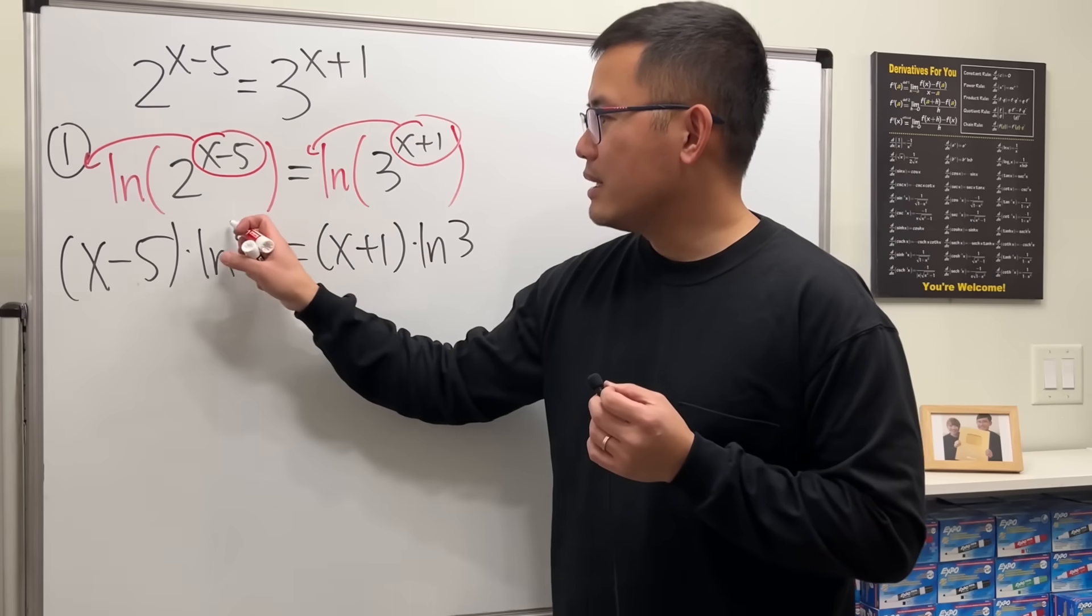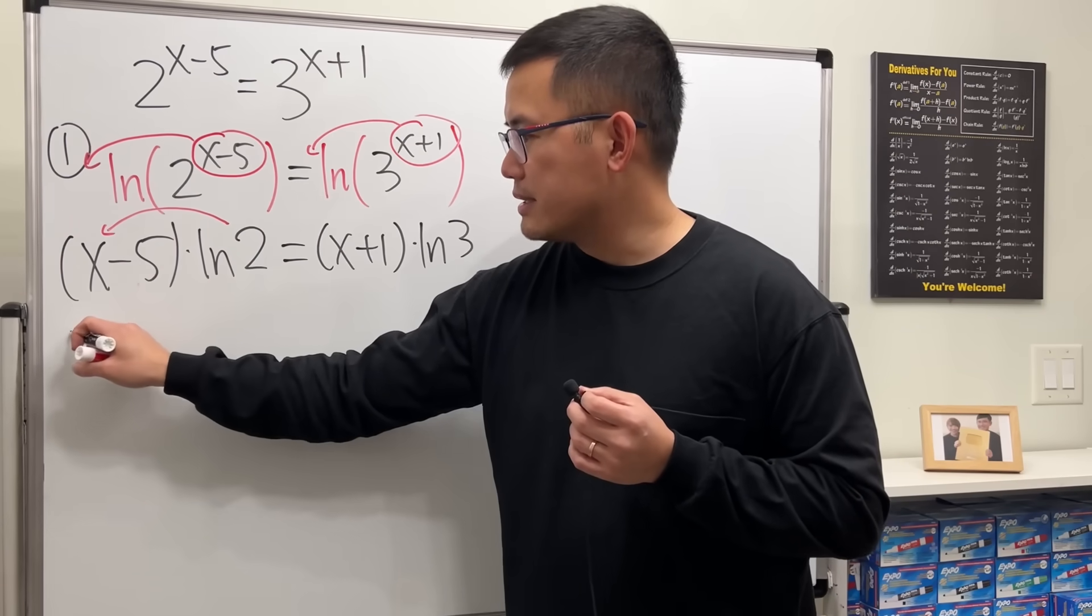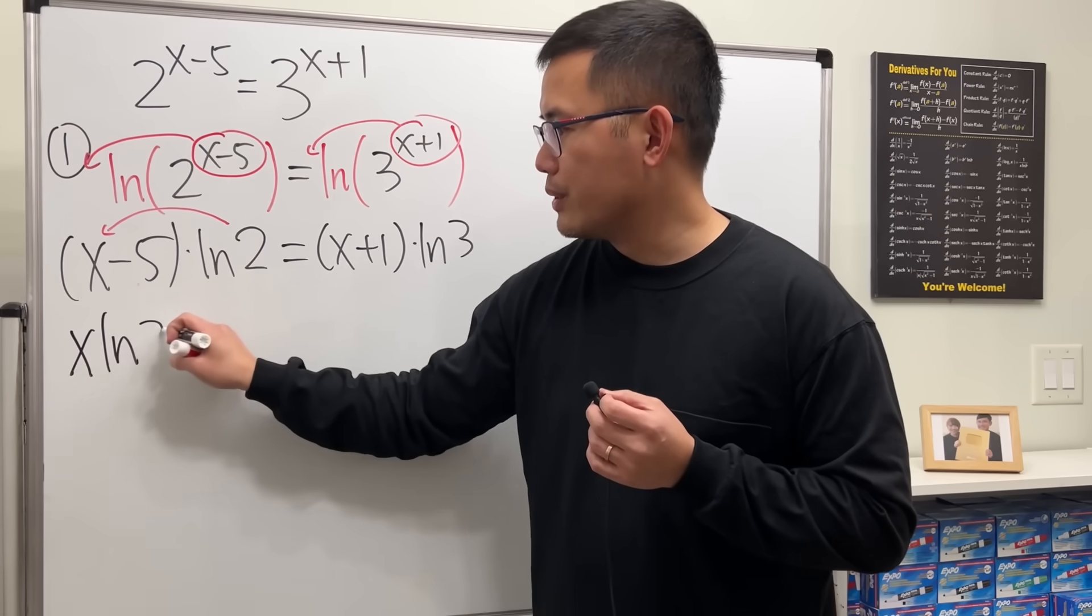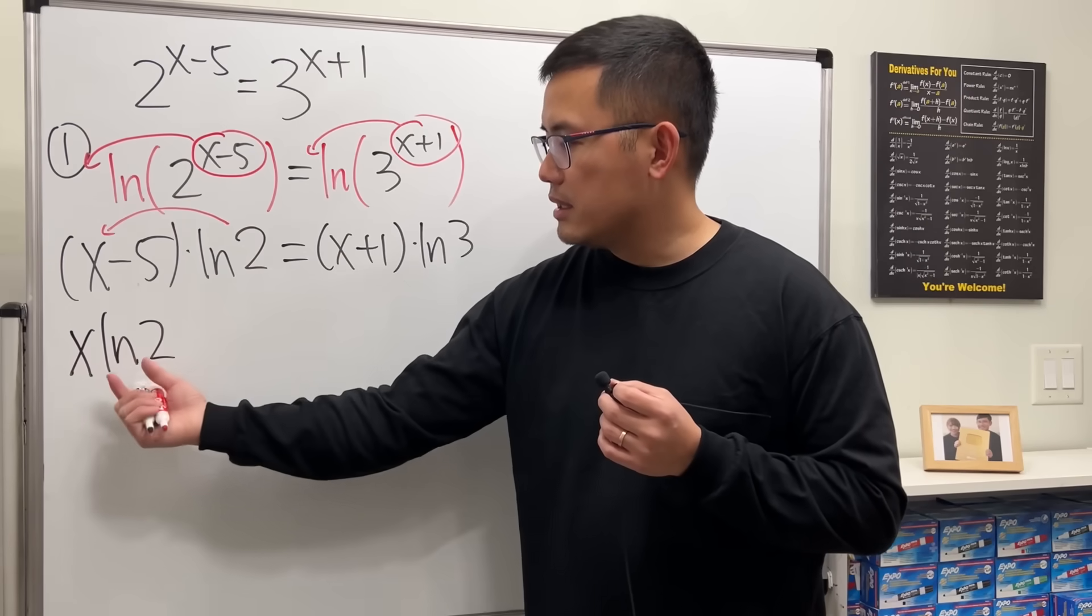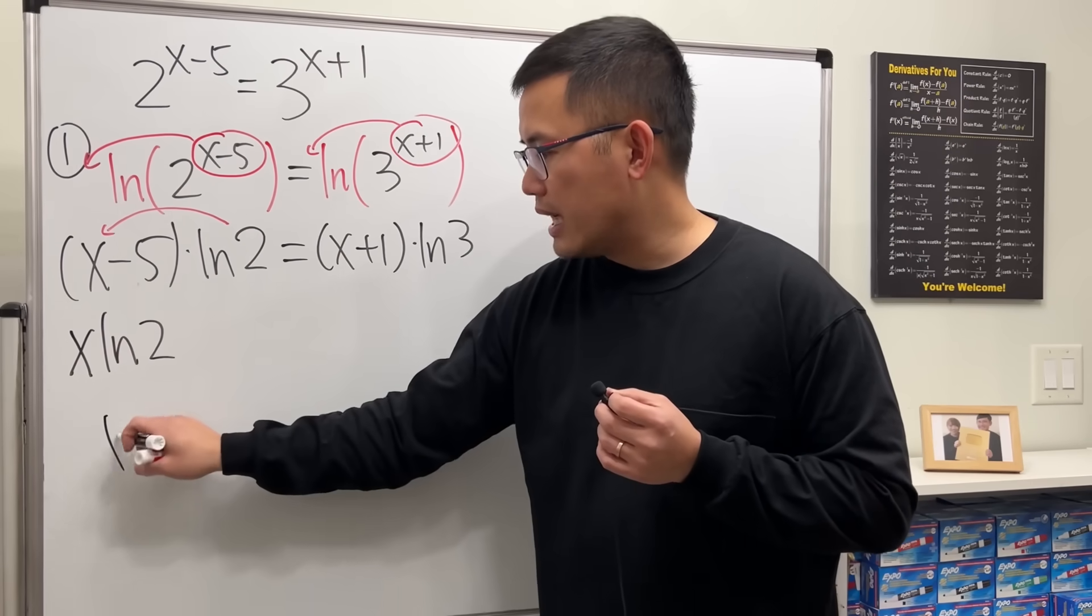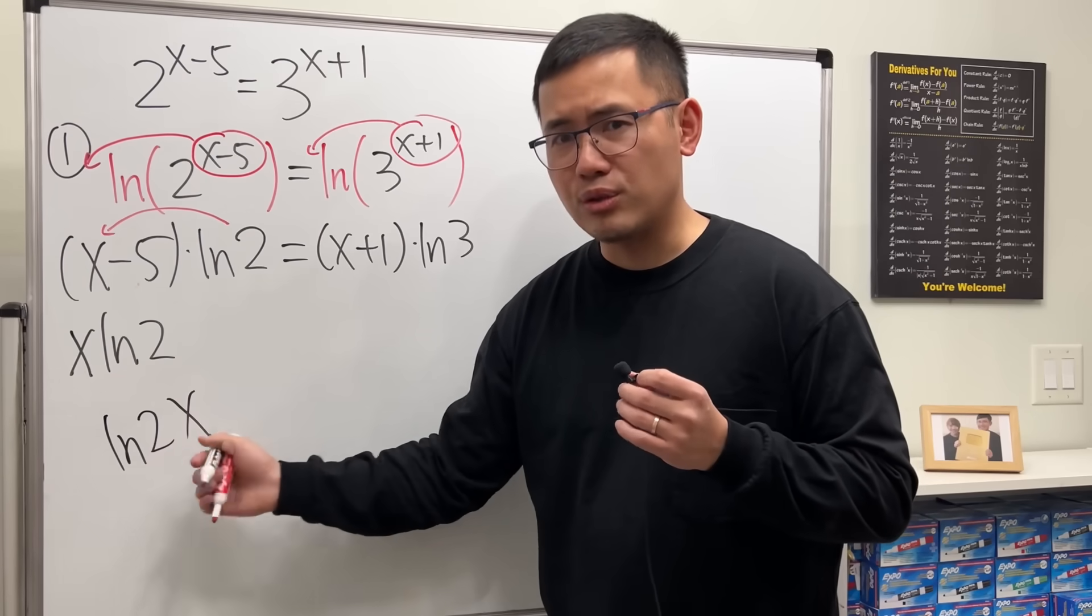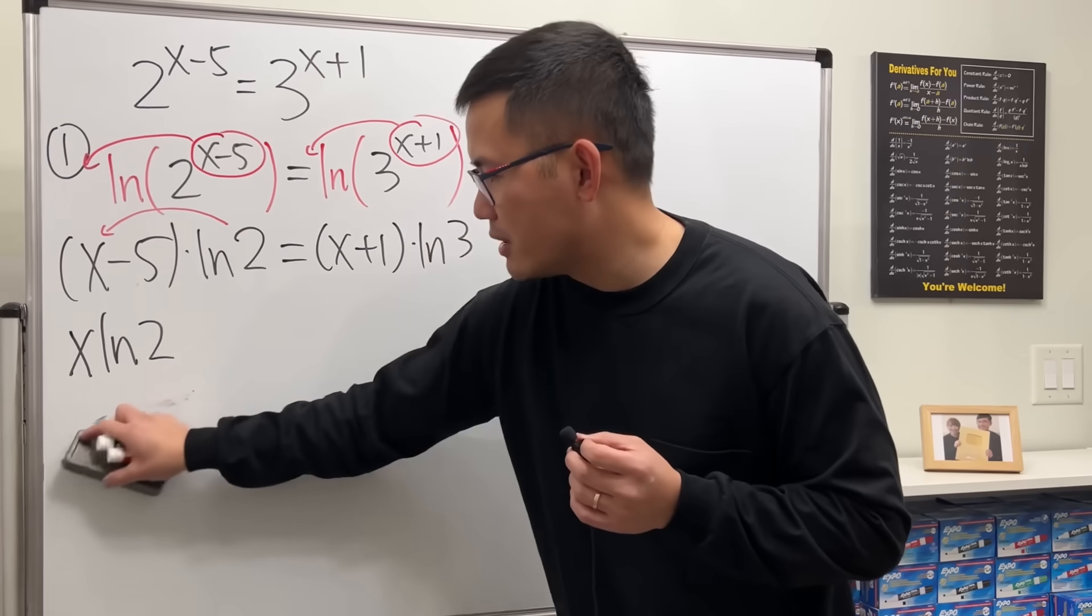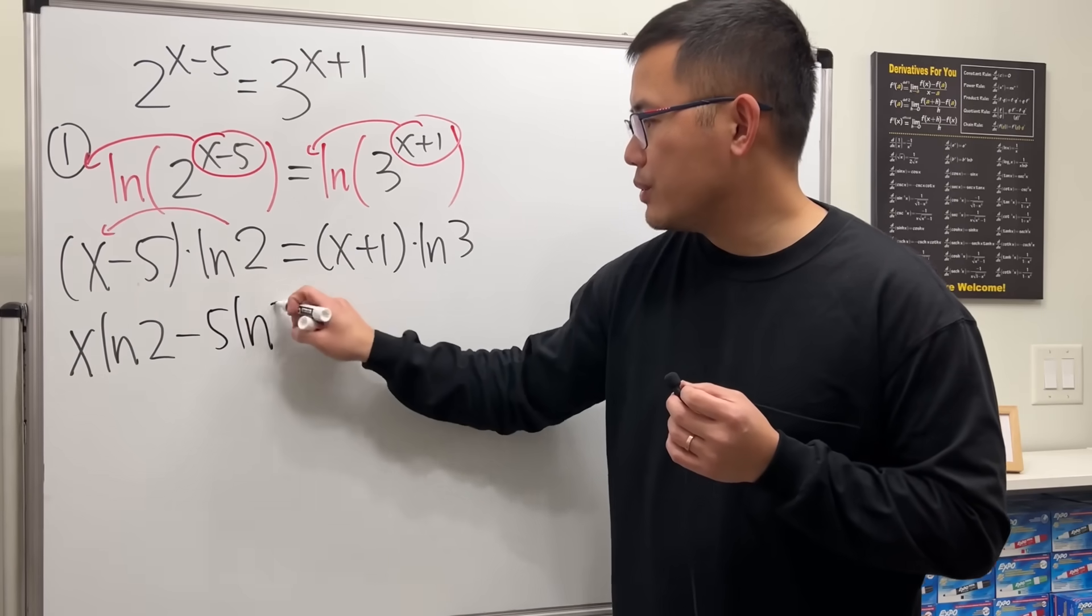ln 2 times x, write it down as x first, and then ln 2. Because this will be clearly shown that x is multiplied with a number rather than ln 2x. This looks like x is inside of the natural log. That's not what we are talking about here. All right. Continue. Minus 5 times ln 2.